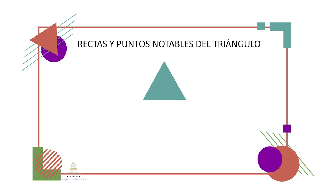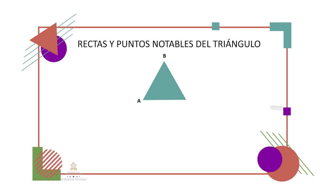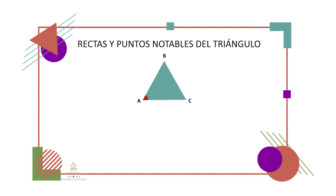Un triángulo en geometría es un polígono determinado por tres rectas que se cortan dos a dos en tres puntos, que no se encuentran alineados. Los puntos de intersección de las rectas son vértices A, B y C, y los segmentos de recta determinados son los lados del triángulo AB, BC y CA. Dos lados contiguos forman uno de los ángulos interiores del triángulo. En los triángulos se puede notar un grupo de rectas y puntos muy importantes.